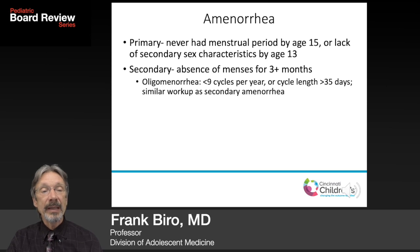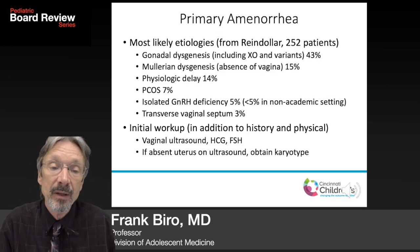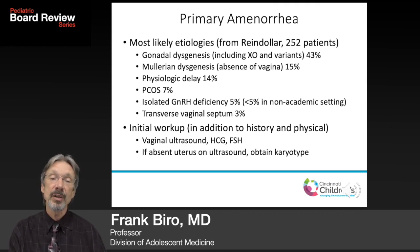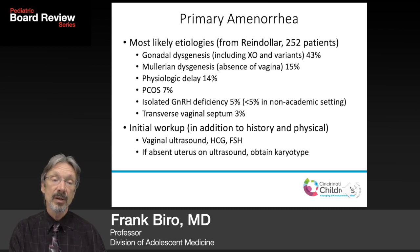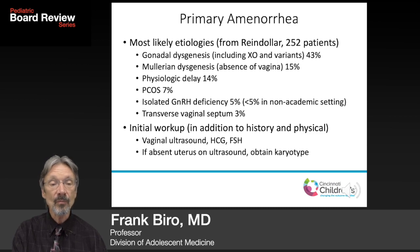The caveat is that in the first 12 to 24 months after menarche, cycles can be very irregular. For primary amenorrhea, a series by Richard Reindoller of 252 patients at a tertiary center found: 43% gonadal dysgenesis, 15% Müllerian dysgenesis, 14% physiologic delay, 7% PCOS, 5% isolated GnRH deficiency — noted to be higher than expected outside tertiary care — and 3% transverse vaginal septum.